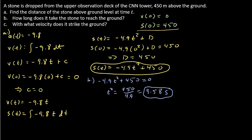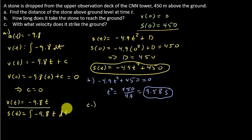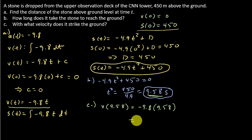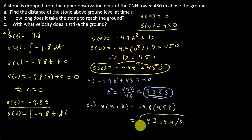For part c, it wants to know with what velocity the stone strikes the ground. To find that, I use my velocity function. The stone hits the ground at t = 9.58 seconds, so I evaluate v(9.58) = -9.8(9.58), and that gives me negative 93.9 meters per second. And there's your answer to that one.